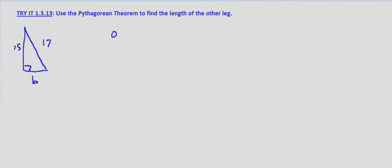a squared plus b squared equals c squared, where a is the length of one leg, b is the length of the other leg, and c is the length of the hypotenuse.